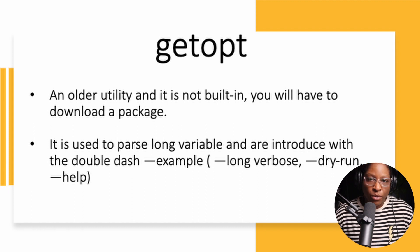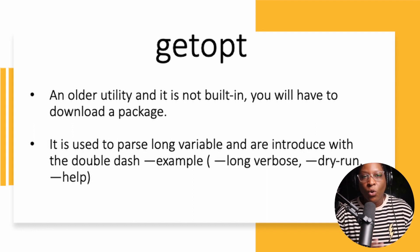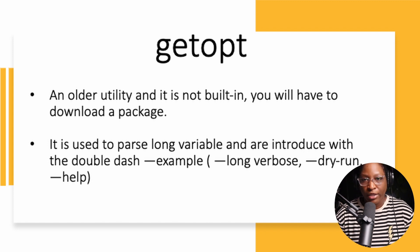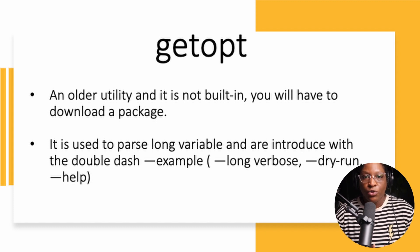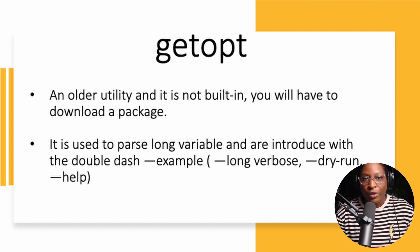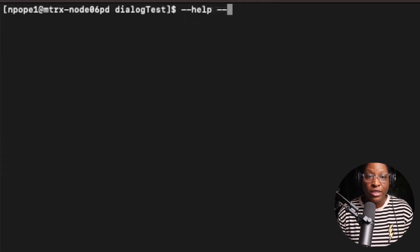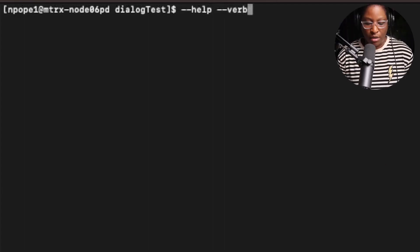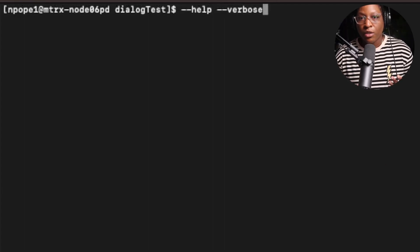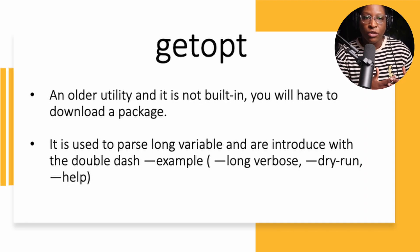getopt without the 's' is an older utility and it's not built-in, so you would have to download packages in order to use it. getopt is used to parse long variables and it is introduced with the double dash — for example, --help or --verbose.